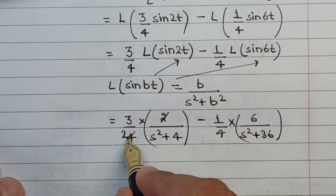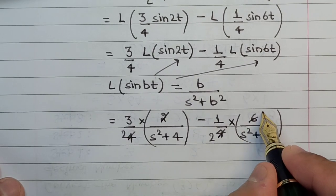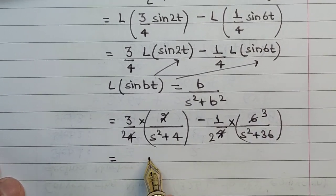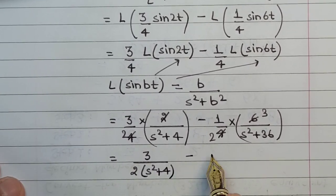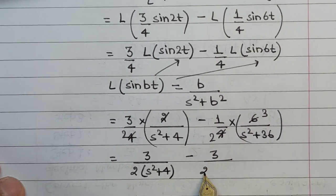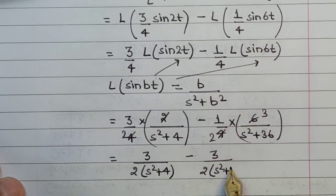Let's cancel out the common terms. This is 2, this is 2 and 3. The final answer that we get is 3 upon 2 times s square plus 4 minus 3 upon 2 s square plus 36.